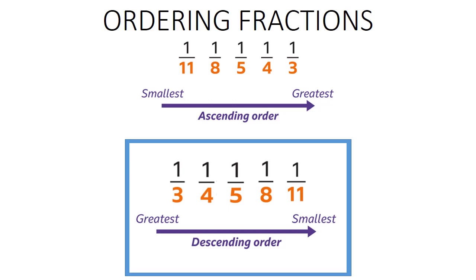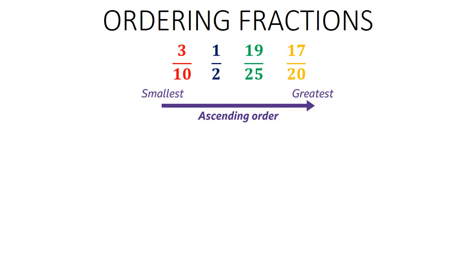Feel free to watch this video over and over again. Now we're looking at fractions that are totally unrelated — denominators are not the same, numerators are not the same. That's a different game entirely. We want to order 3 over 10, 1 over 2, 19 over 25, and 17 over 20. It's already arranged in ascending order here, but how can you prove this if the fractions were scattered?